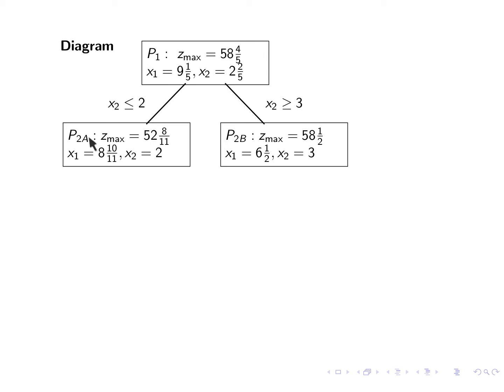These two problems can now be solved using LP Assistant, and then here we record the solution. We see that for 2A, we have the max, which is a bit less than that, and X1 and X2. So X2 become integral, X1 is not. For the problem P2B, we have Z max here, and then we have X1 is 6.5, and X2 is integral. So we see in both solutions, X1 is not integral.